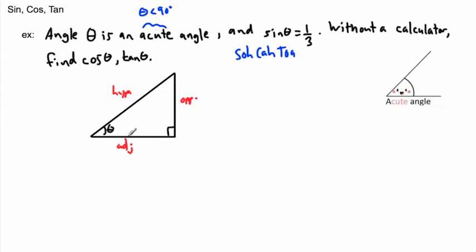They told us that sine of theta is 1/3. Leave it as a fraction, because sine is opposite over hypotenuse. That tells us the opposite is 1 and the hypotenuse is 3. So we can now label the triangle: the opposite side has a length of 1 and the hypotenuse has a length of 3.